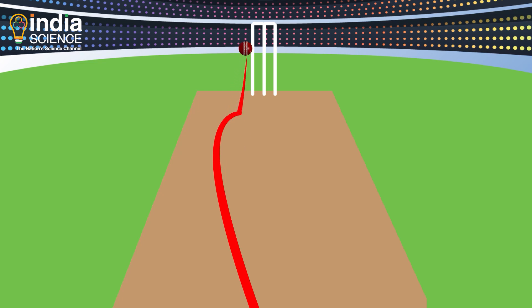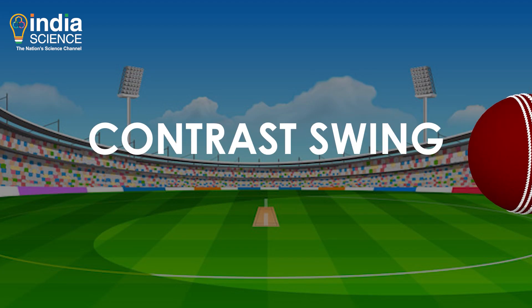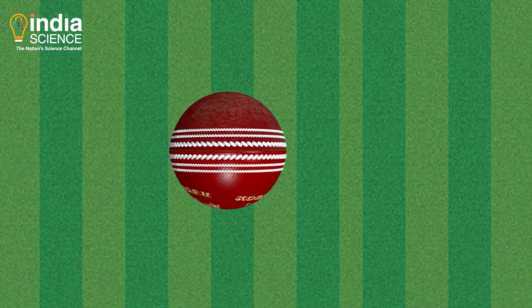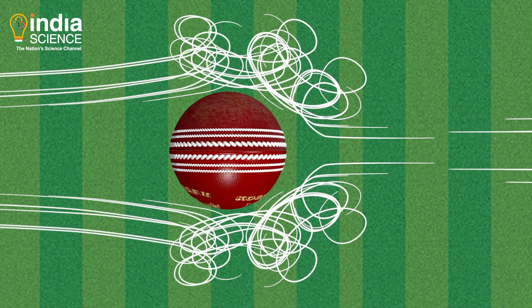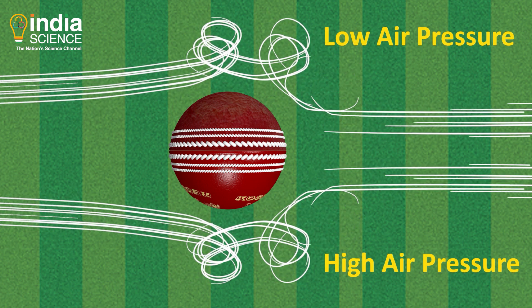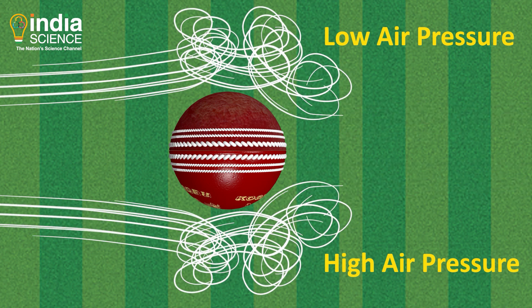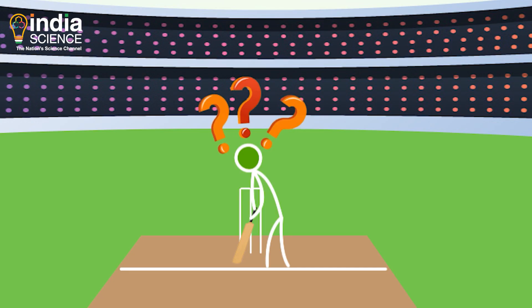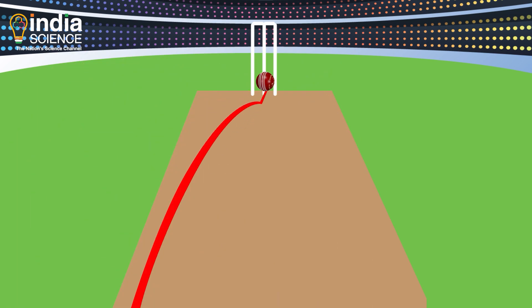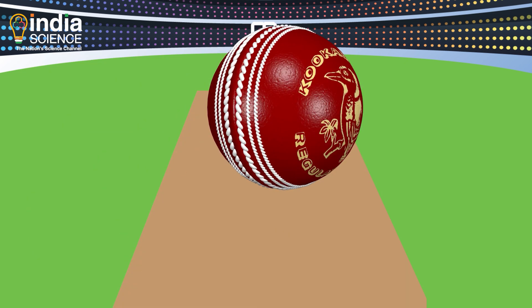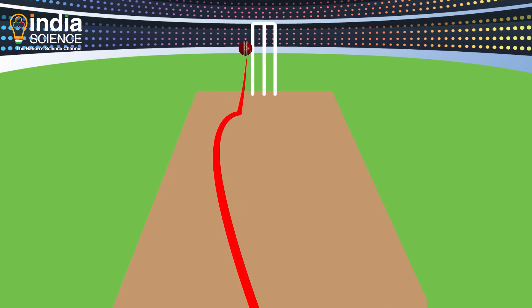There is one other type of swing bowling as well — it is called contrast swing. In this, the direction of the seam is in the direction of the throw. Both sides will have turbulent flow, but the turbulence at the rough side will be more, and hence the ball will swing towards the rough side. So how can you tell what type of swing a bowler is producing? Note the seam orientation and swing direction: if they are coincident, it is conventional swing; if opposed, it is reverse swing; and if the seam is pointing straight down the pitch, you've just witnessed contrast swing.